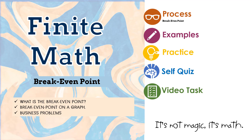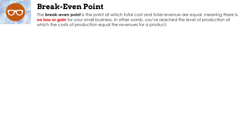Let's get started. The break even point is the point at which total costs and total revenue are equal, meaning there is no loss or gain for your small business. In other words, you've reached the level of production at which the costs of production equal the revenues for a product.